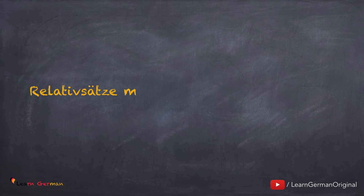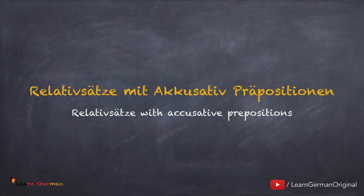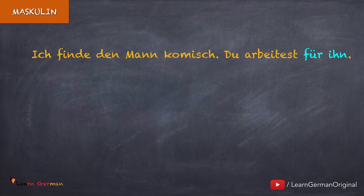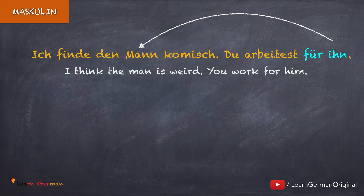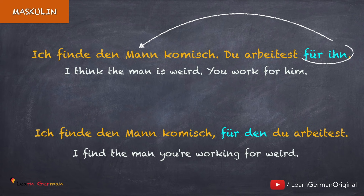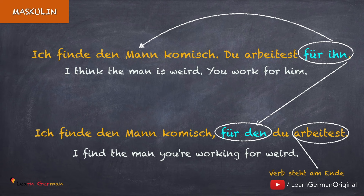So, was passiert wenn wir Akkusativpräpositionen haben? Relativsätze mit Akkusativpräpositionen — hier ist das Beispiel für Maskulin: Ich finde den Mann komisch — du arbeitest für ihn. Für ist eine Akkusativpräposition. Im Relativsatz sagen wir: Ich finde den Mann komisch, für den du arbeitest. In diesem Fall beginnt der Relativsatz mit der Präposition, danach kommt das Relativpronomen, und am Ende steht das Verb.